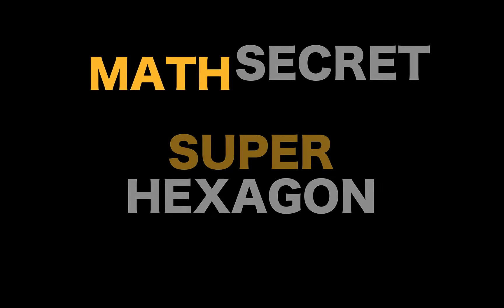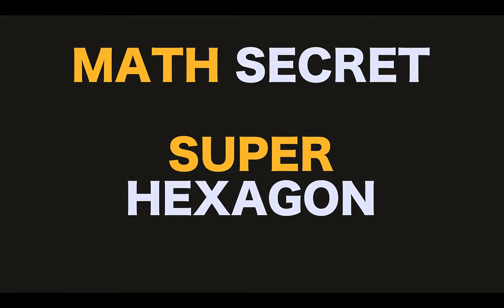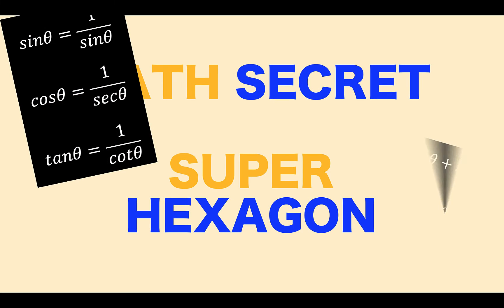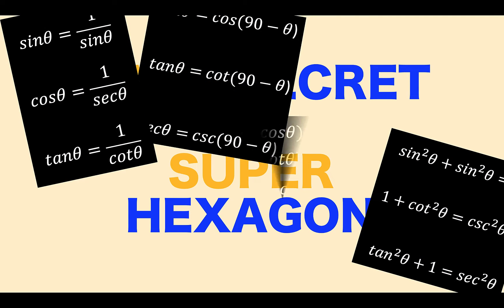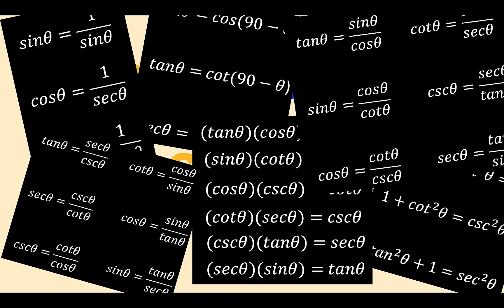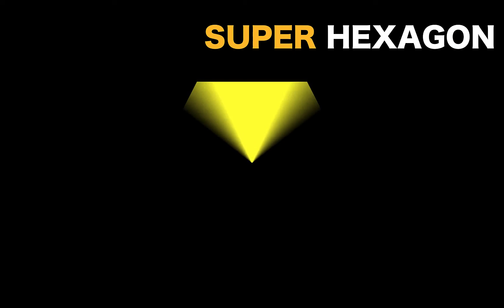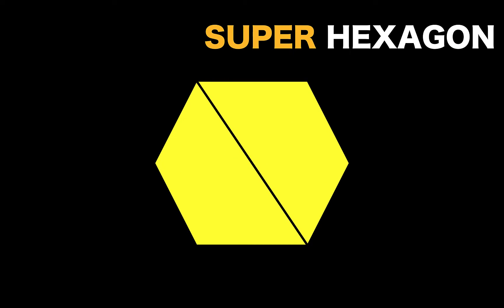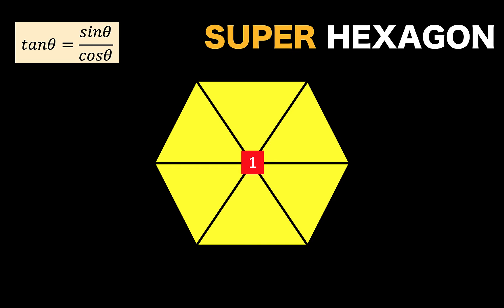In this video we are going to talk about a math secret — this is about the super hexagon. Do you want to know how to memorize the different trigonometric identities? Well, the secret is not to memorize, but to use a mnemonic device which we call the super hexagon. There is only one formula you have to remember: the tangent of angle theta is equal to sine theta over cosine theta.